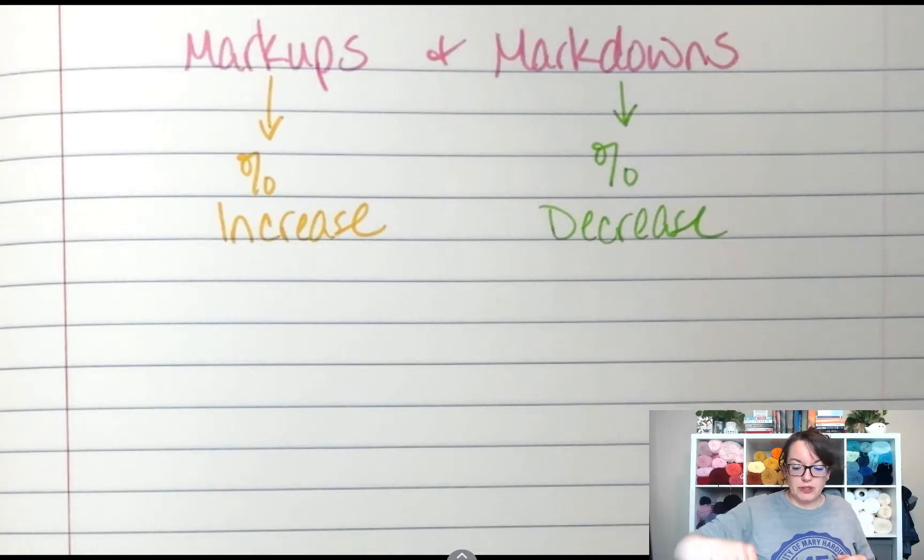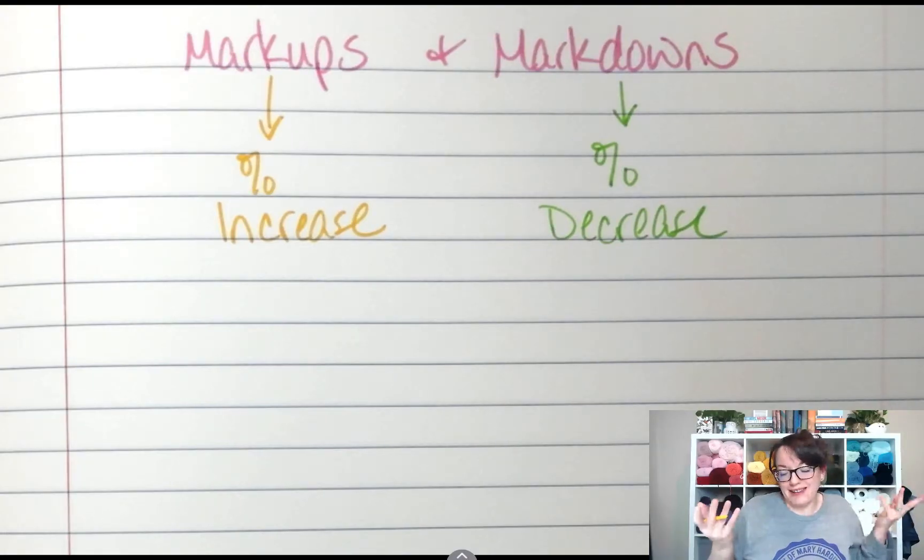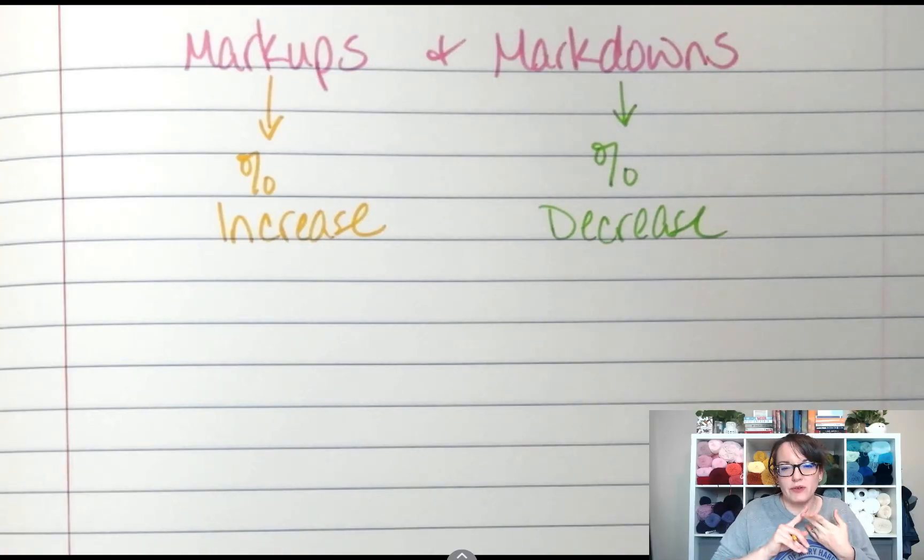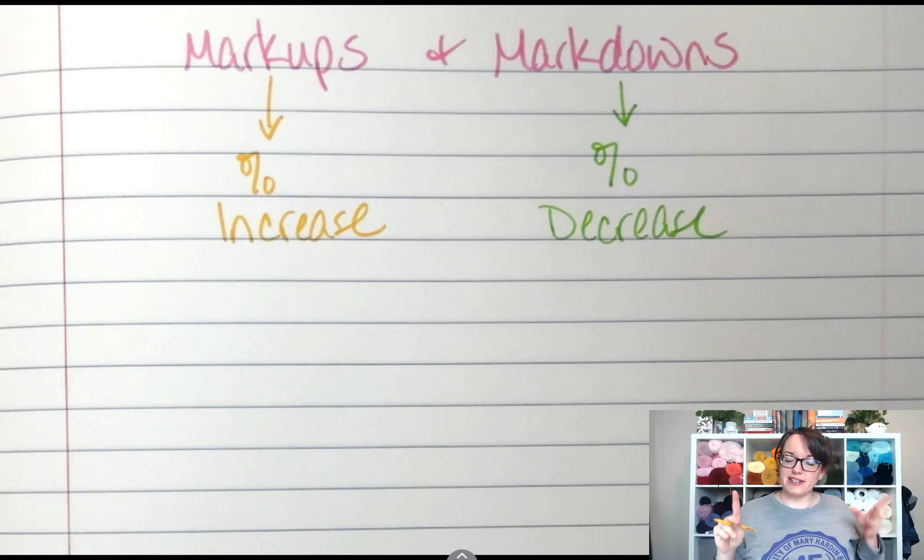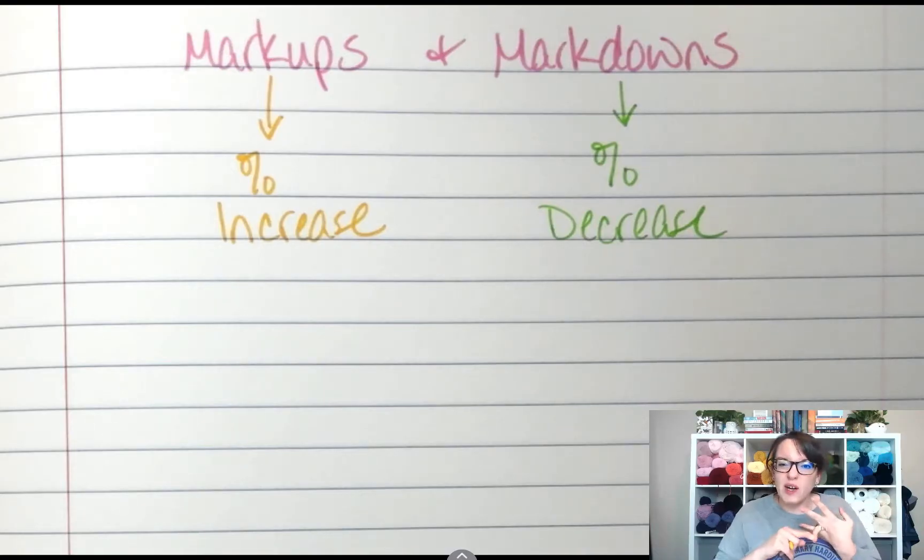Examples of percent increase: tax. It's really the only one I can think of. Taxes are an increase. If you ever go to a restaurant and you have to pay gratuity, that would be a percent increase. Percent decreases, now here's where I shine. You've got your coupons, you've got your discounts, you've got like buy one get one free kind of things. So percent decrease, that's where I shine. I love to shop, love to shop with a coupon.